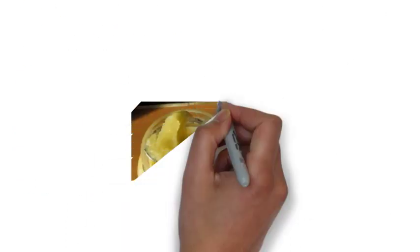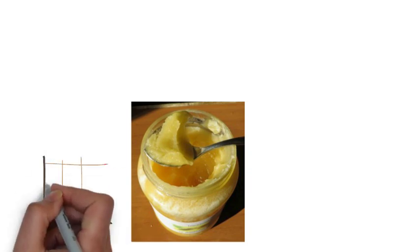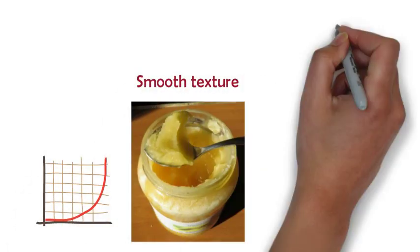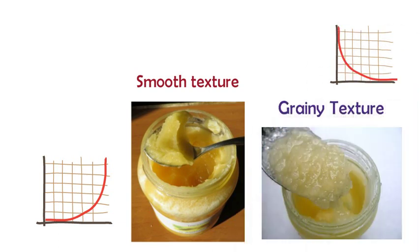The speed of crystallization affects the texture of crystallized honey. If the process of crystallization is faster, then there will be many tiny crystals resulting in a smooth texture. If the process is slower, then the crystals will be larger and fewer resulting in grainy texture.